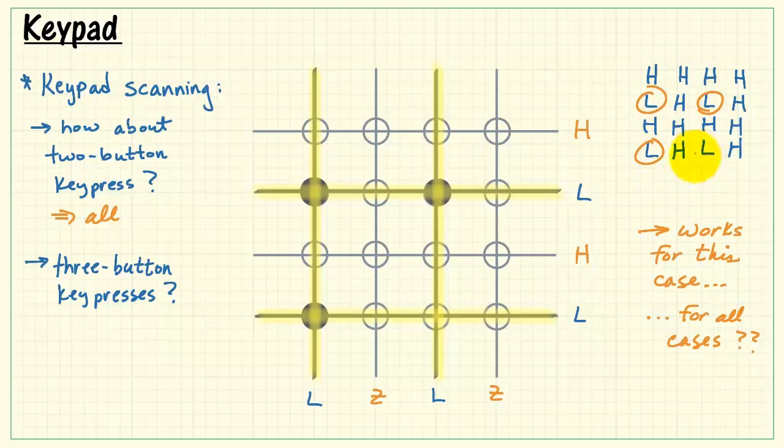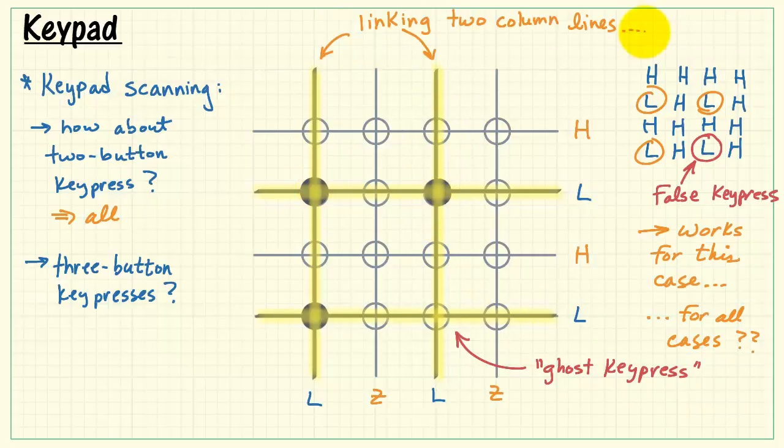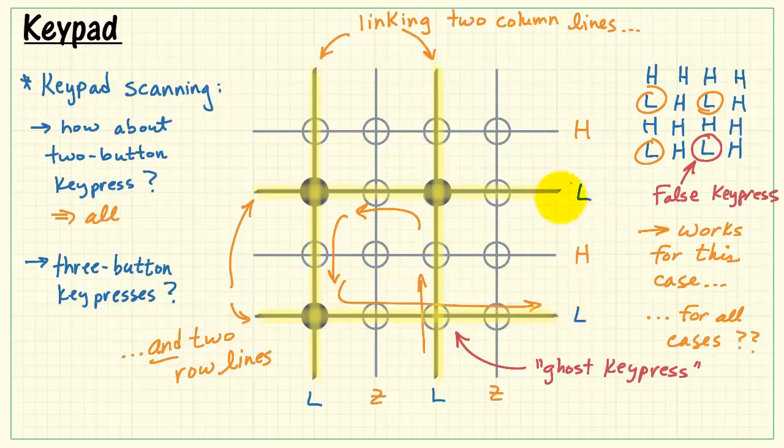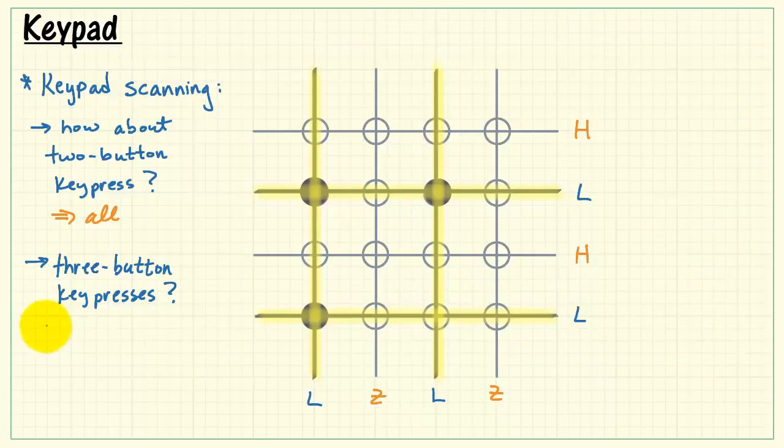Now, these three lows, that worked fine. The problem is we see a false indicator right here. And sometimes this false indicator is referred to as a ghost key press. We get this any time that two column lines are linked by switches, and we are also linking two row lines. Because when you trace this grounded line, you see that it ends up getting broadcast to two different columns, and that gives you a false reading out here on the row lines. From this, we conclude that some three key button presses work, while others do not.